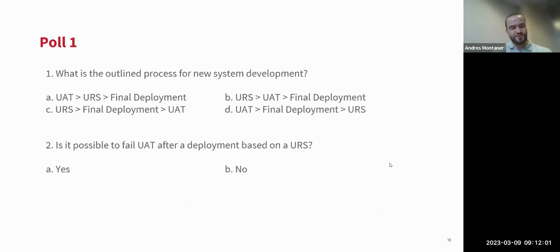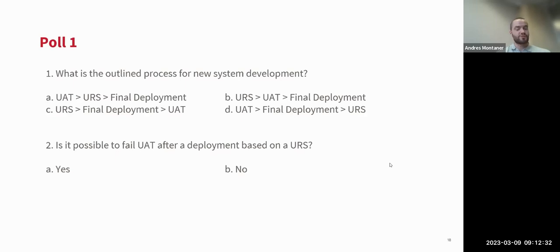We've reached Poll number one. What was the outlined process for creating a new data processing system? The options are: A) UAT, then URS, then final deployment; B) URS, then UAT, then final deployment; C) URS, then final deployment, then UAT; or D) UAT, then final deployment, then URS. Final deployment means the product is completely signed off and approved for use.